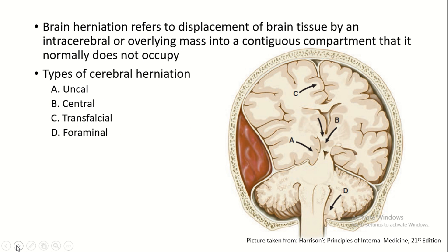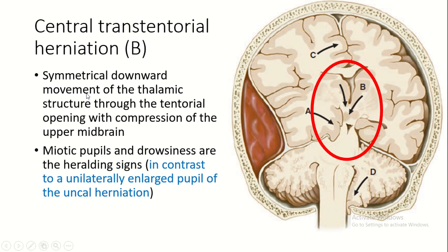Brain herniation can be broadly divided into four types: uncal herniation, central herniation, transfalcial herniation, and foraminal herniation. We'll talk about central, transfalcial, and foraminal herniation briefly and discuss uncal herniation in more detail. Central herniation is a symmetric movement of the thalamic structures through the tentorial opening with compression of the upper midbrain, as indicated by letter B in this picture.